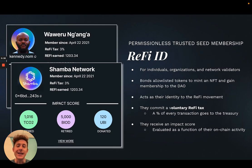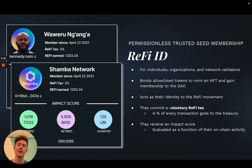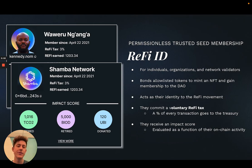The RefiID is a kind of permissionless version of the trusted seed membership which allows people to commit a voluntary tax to the mission-driven community of which they're a part. In this case it's the RefiDAO, but it could be leveraged for anything — for individuals, organizations, and network validators. This revenue stream is paramount and effectively makes a DAO like a nation-state.